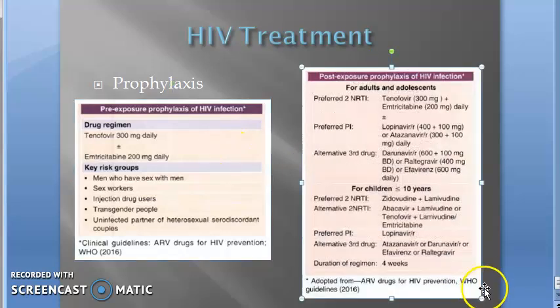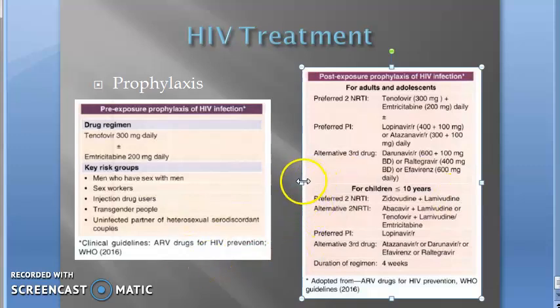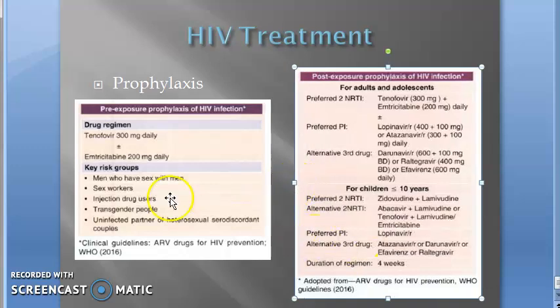Pre-exposure prophylaxis is to prevent the disease for people who haven't been infected but are at high risk — men who have sex with men, sex workers, and injection drug users are pre-exposure candidates. Post-exposure prophylaxis is for people who have had a needle-prick injury, like a doctor or a nurse.